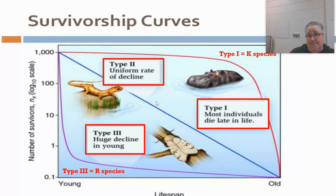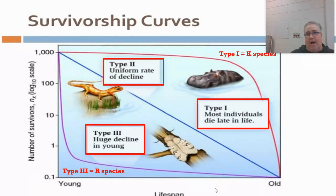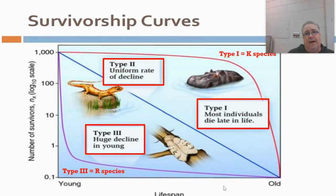Then there's Type 2, which is right in the middle. A salamander is a good example — it doesn't quite fit the Type 1 curve and doesn't quite fit the Type 3 curve. It fits somewhere in between, showing a sort of steady gradual decline from young to old age. Anyway, there was a lot here today, so make sure you look over those notes. I will see you guys soon. Take care.